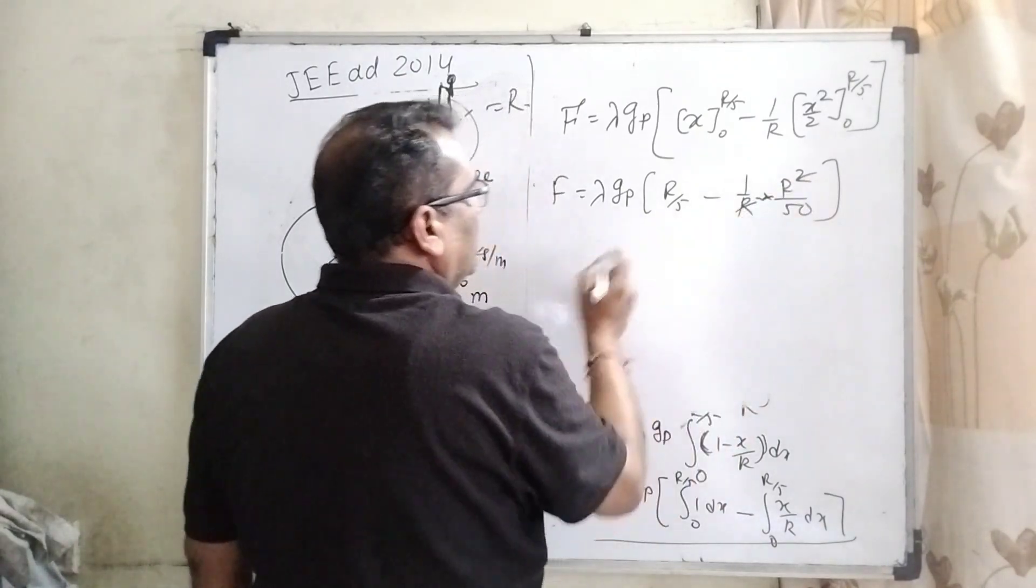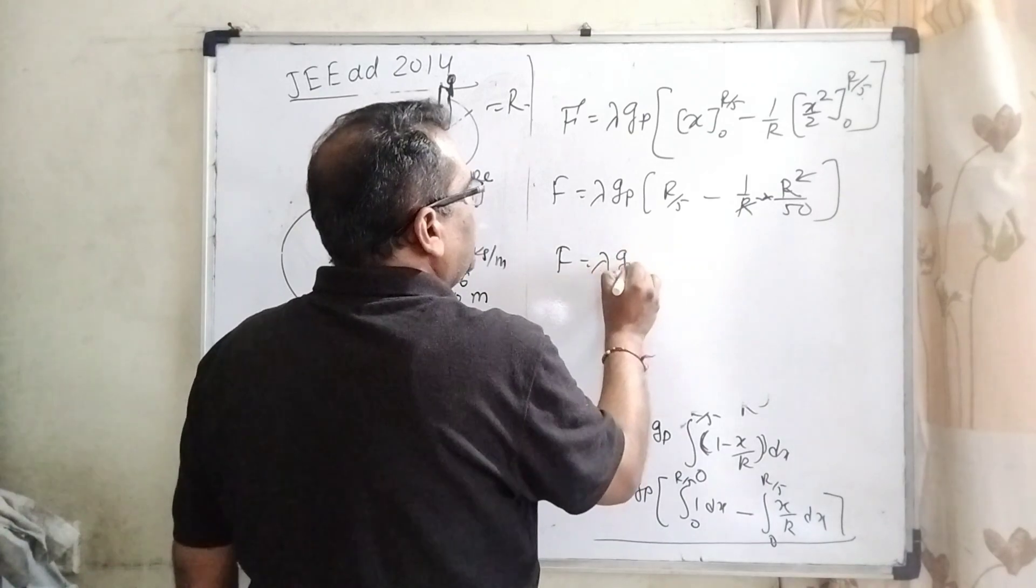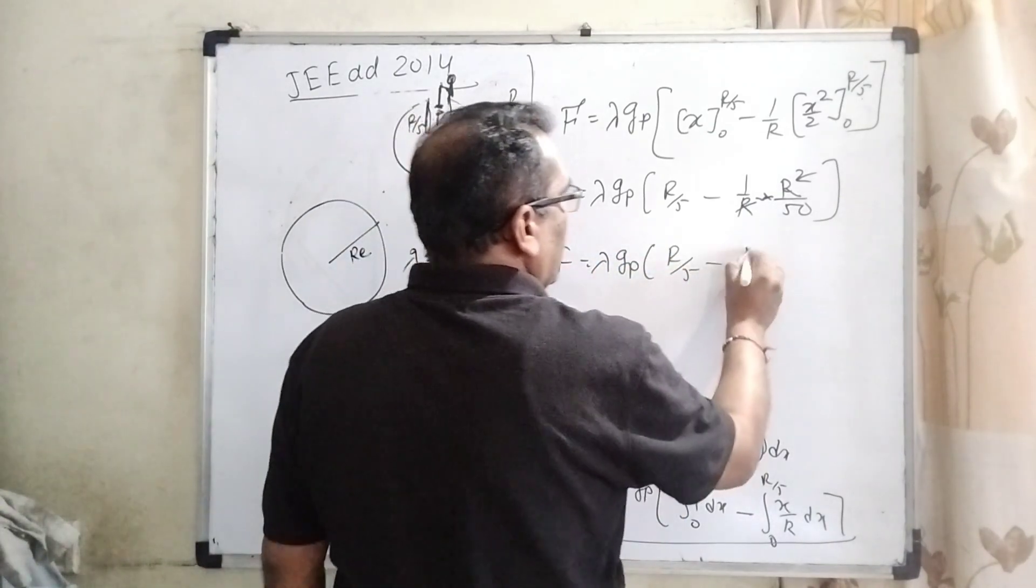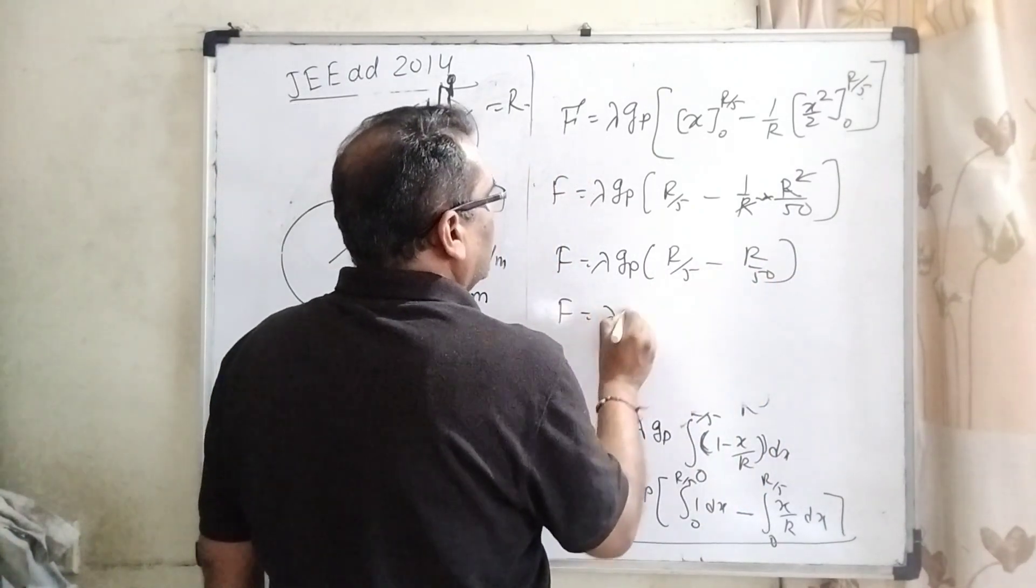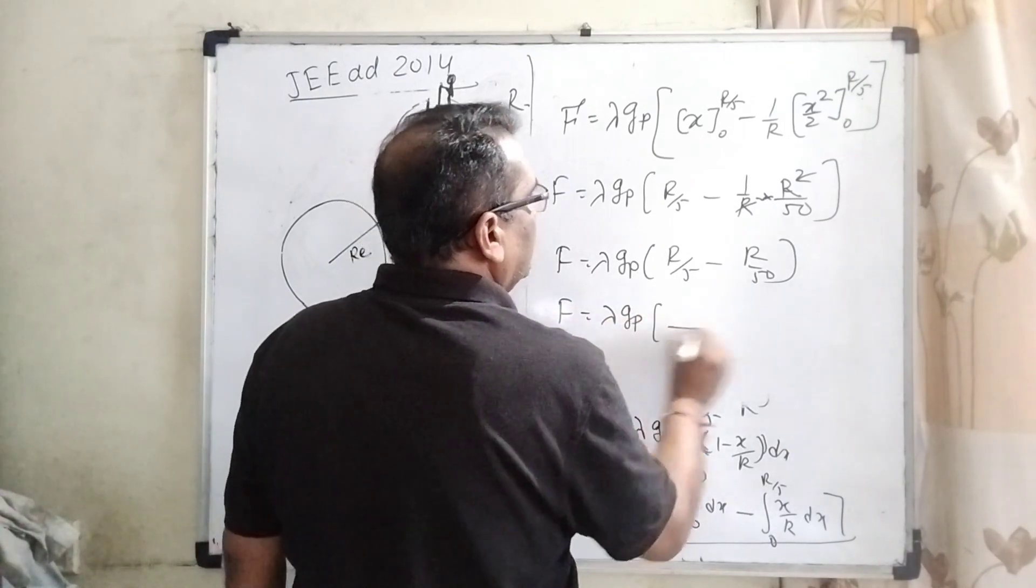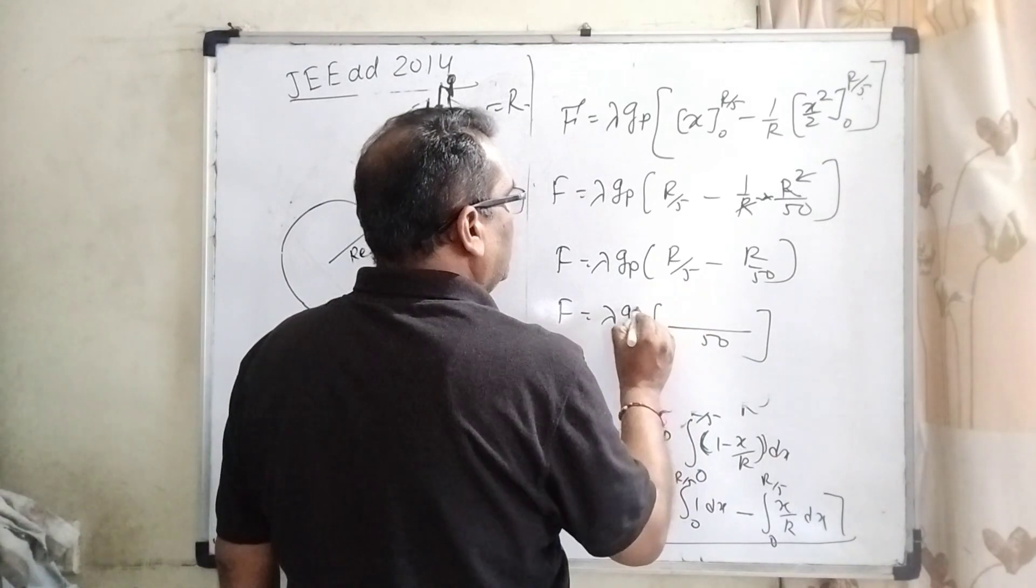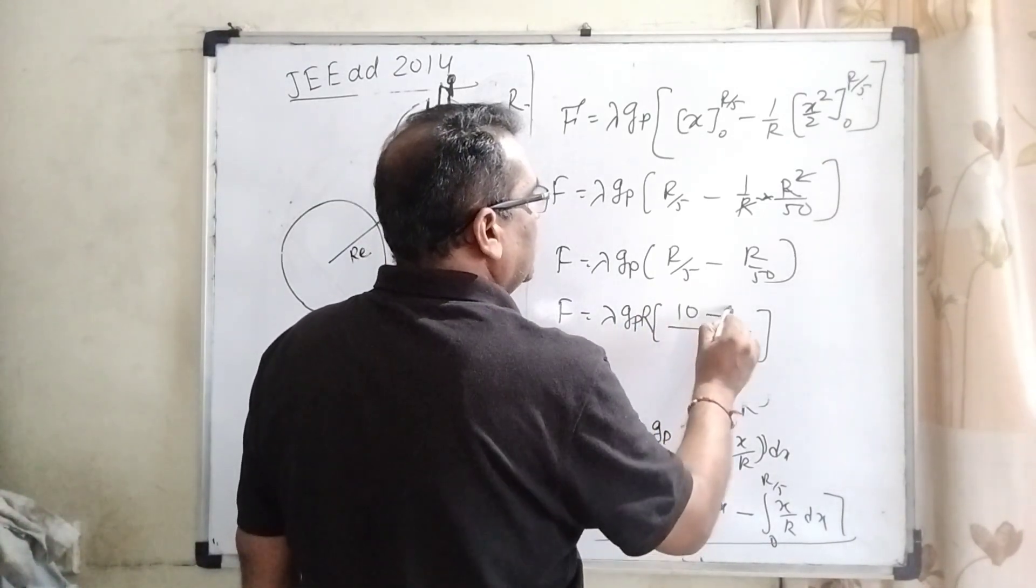Then, it becomes, cancel out one R and one R is remaining. f equal to lambda gP, R by 5 minus R by 50. Then, substitute the values, lambda and gP, here is the 50, R take common and 10 minus 1.